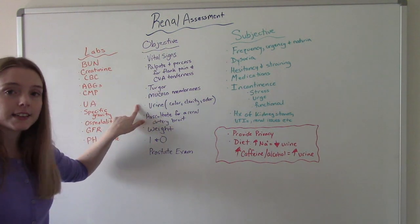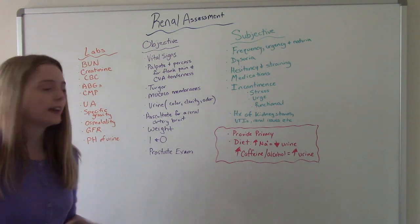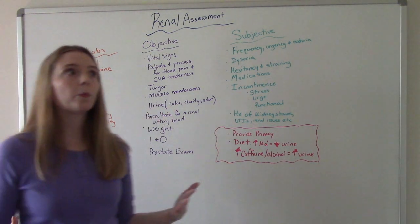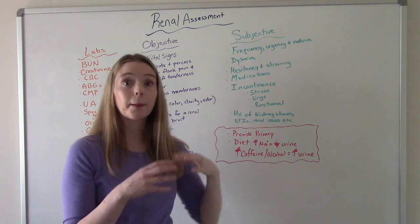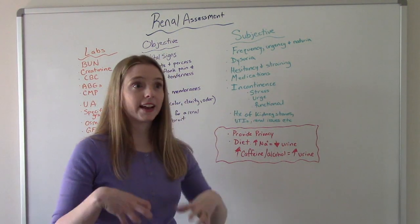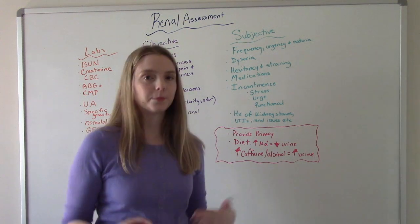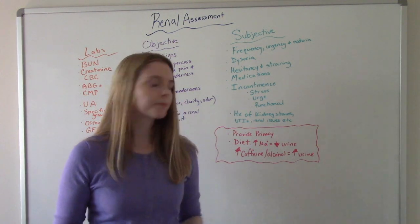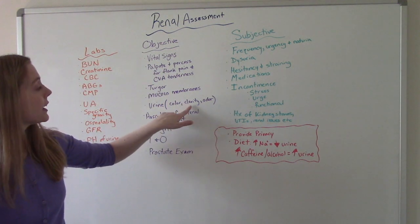If we're assessing their urine, things we want to look for in the urine include color. So normal urine color is kind of like a pale yellow straw-like color. So if it's like an amber or an orange or something like that, we want to note that.